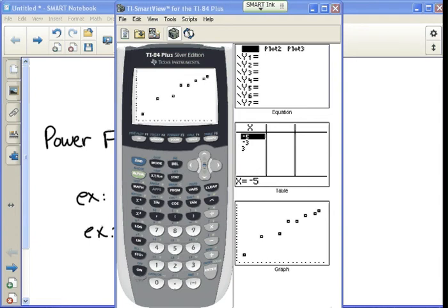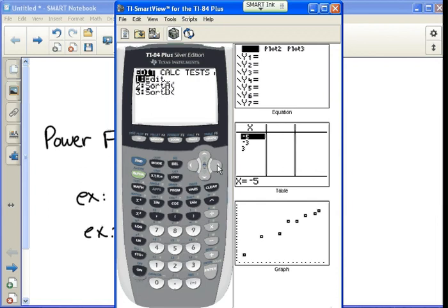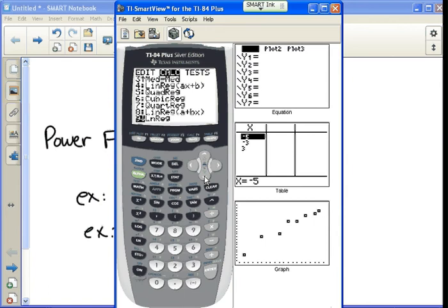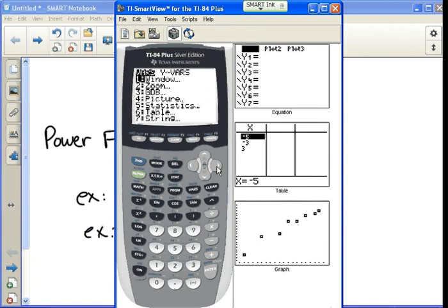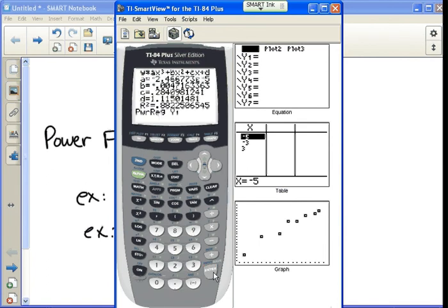Let's go to stat, go to calc, and we'll go down all the way until we see power regression, which is A. So power regression. Then we put vars, yvars, this will graph it for us. And we get this format.